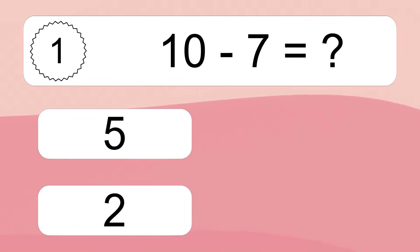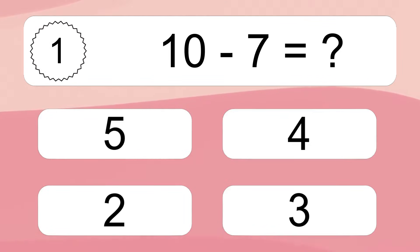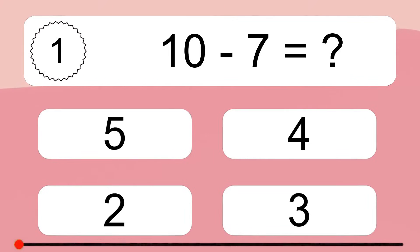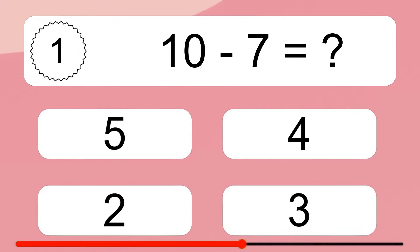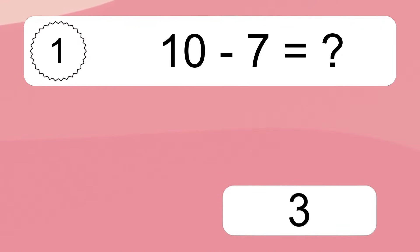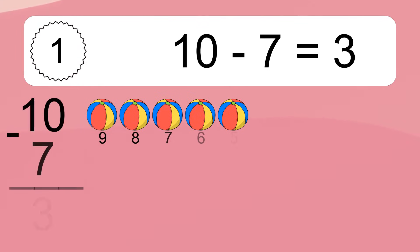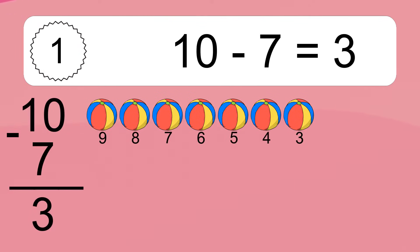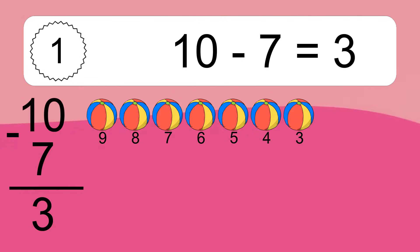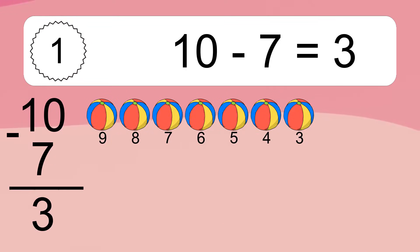10 minus 7 equals what? 10 minus 7 equals 3. Let's count it: 9, 8, 7, 6, 5, 4, 3.